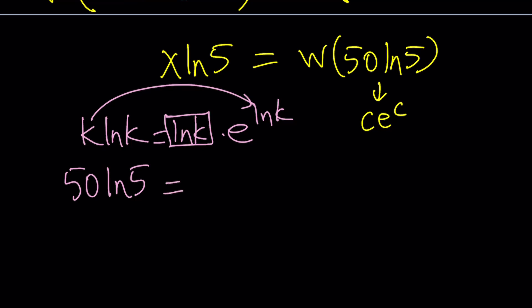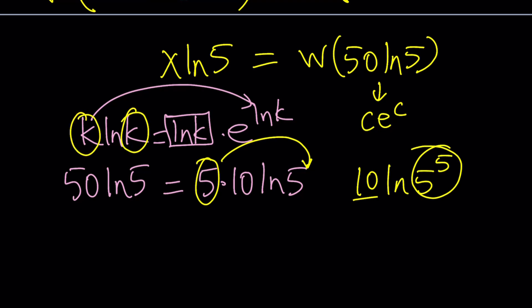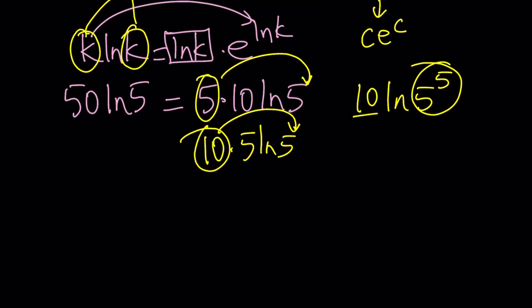I can write the 50 as 5 times 10 ln 5, and then I can take one of these numbers and send them back as powers, and then this is going to be, for example, 10 ln 5 to the 5th, but these numbers are not equal. They're supposed to be equal. Look at this. K ln K means they're the same numbers. Or I can try 10 times 5 ln 5 and try to send back the 10, but again, it's not going to work. So 5 times 10 is not a good way to do it. Maybe we should try something else.